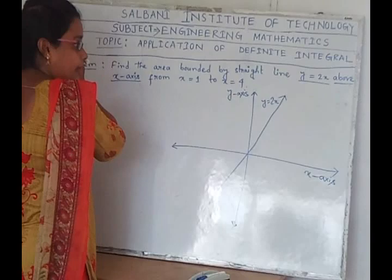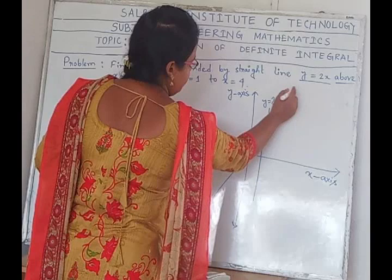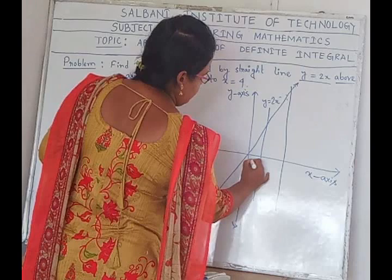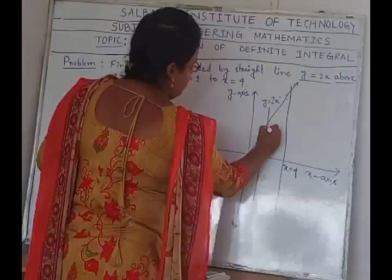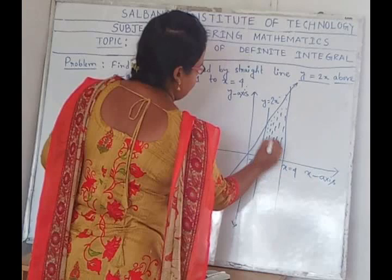Then we draw the line x equals 1 and the line x equals 4. So we find out the area which is bounded from x equals 1 to x equals 4.